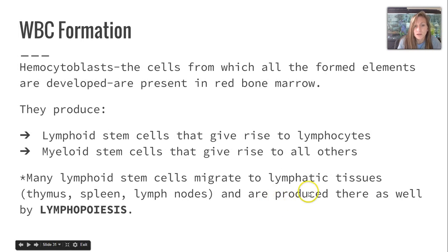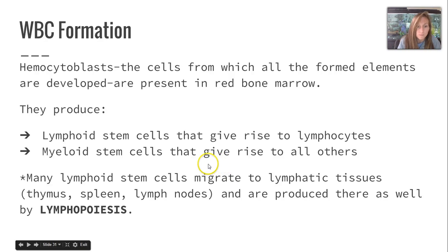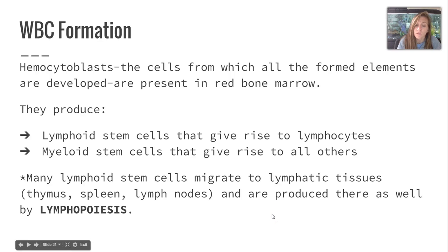The formation of white blood cells starts with hemocytoblasts, the cells from which all formed elements are developed, present in the red bone marrow. They produce lymphoid stem cells that give rise to lymphocytes, as well as myeloid stem cells that give rise to all the others — red blood cells, platelets, and all other white blood cells. Many of those lymphoid stem cells also migrate to lymphatic tissues such as the thymus, spleen, and lymph nodes, where they are also produced by lymphopoiesis, which is simply the making of lymphocytes.